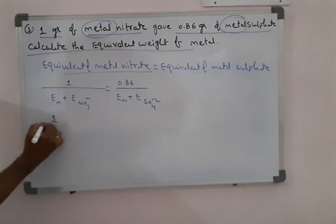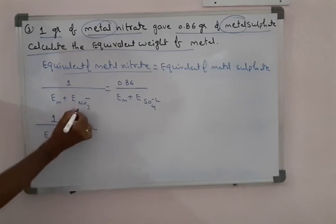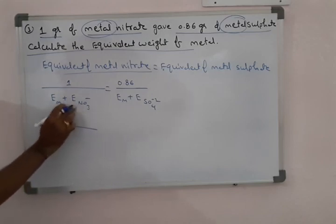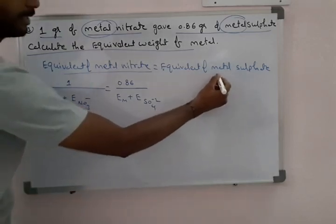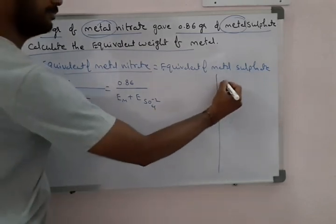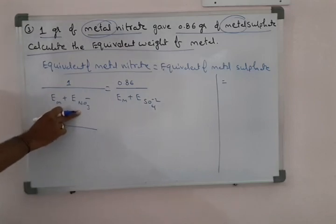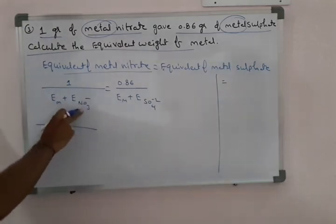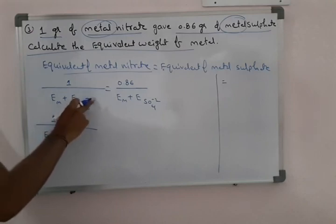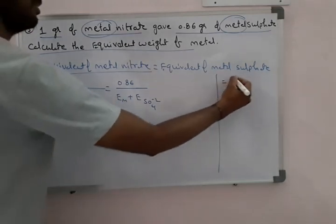How do we calculate the equivalent weight of nitrate? The total formula weight divided by its valence, which is its charge of 1. The nitrogen and oxygen give a molecular weight for nitrate, and the total charge is only one negative charge, so the equivalent weight of nitrate equals its formula weight divided by 1, which is 62.